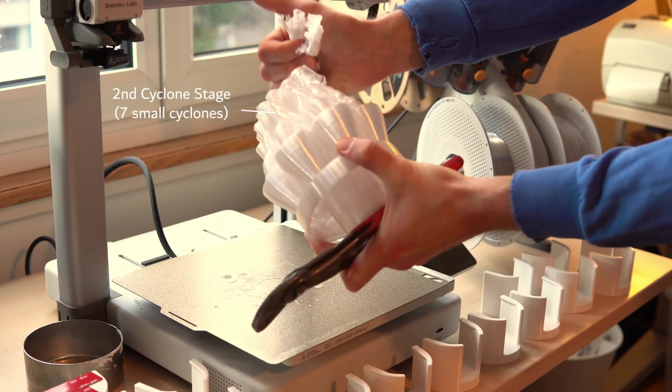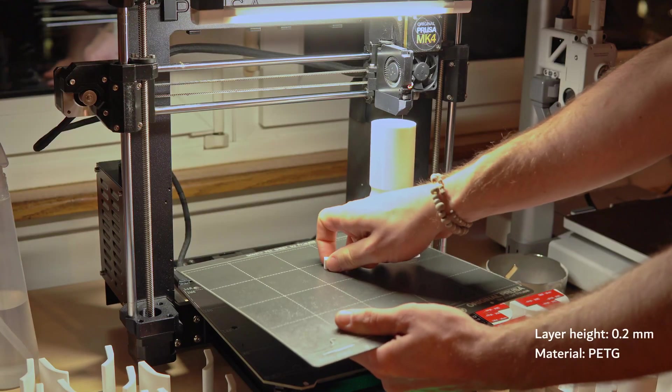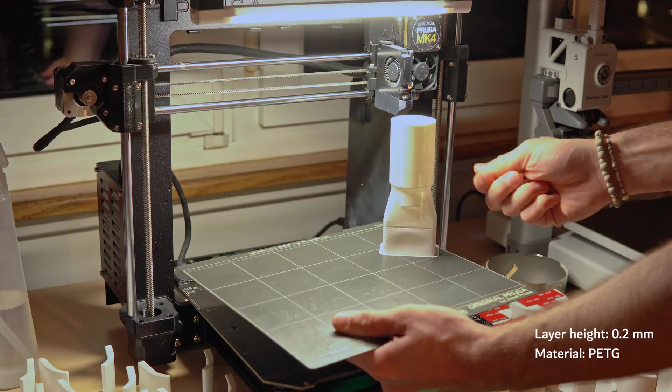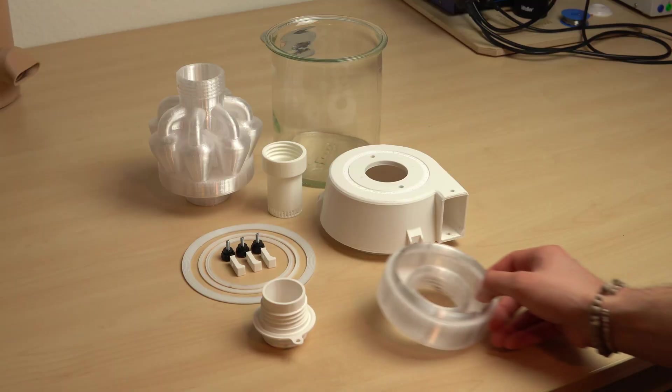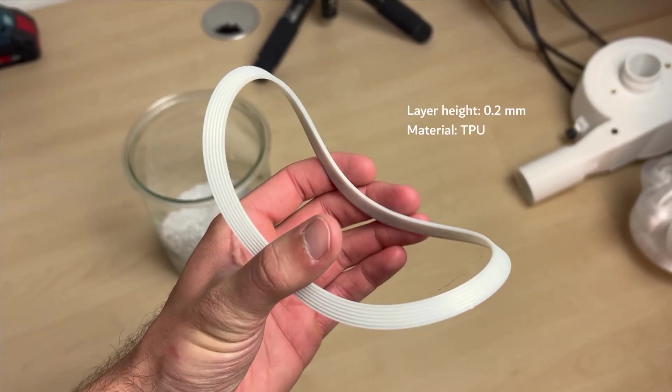Only that part needs a lot of supports, but it's still manageable I would say. I use 0.2mm layer height on all the parts, and the material is always PETG. Except for the sealings, those are made in TPU because they have to be a bit more flexible in order to tighten the connections.